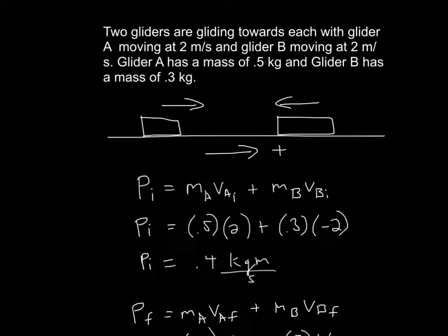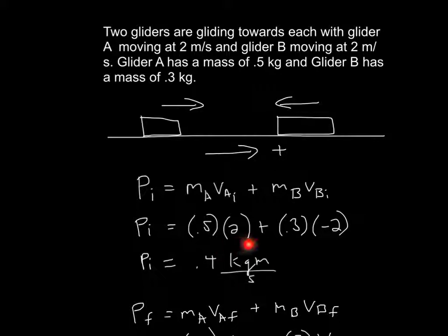So if we have the initial momentum, it'll be mass times velocity plus mass times velocity of glider A and glider B. So let's just plug in information. For the mass of glider A, that was 0.5, and the velocity of glider A is 2. Since these are coming from different directions, we'll arbitrarily say that right is positive. So for mass B — B would be negative. The mass of B would be 0.3, and the velocity would be negative because it's coming in from the right.